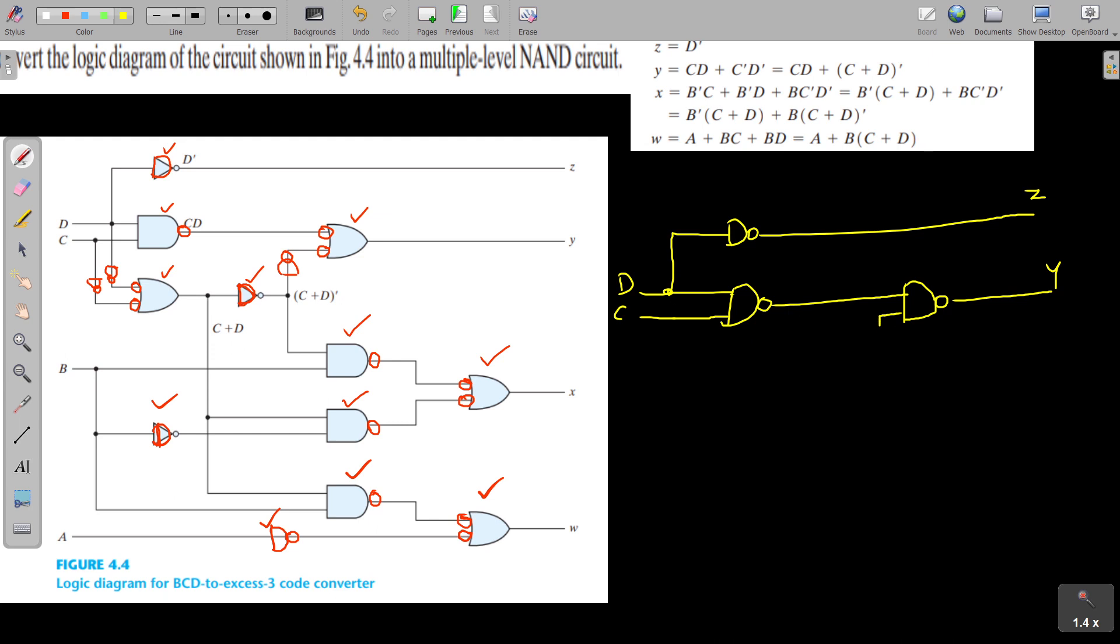What's the next input? It comes from here and you need an inverter for this. That is also drawn using this NAND gate, like this. Okay.